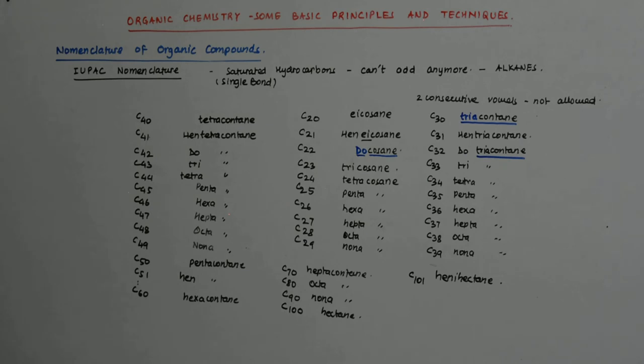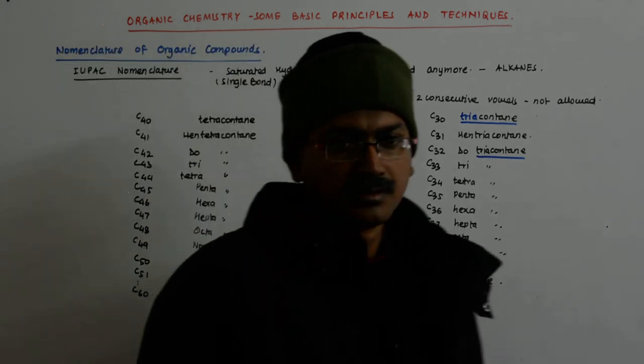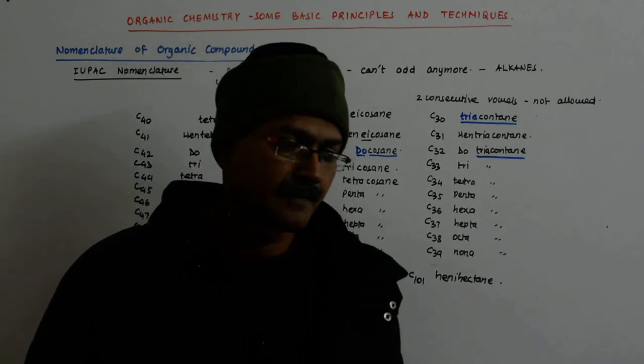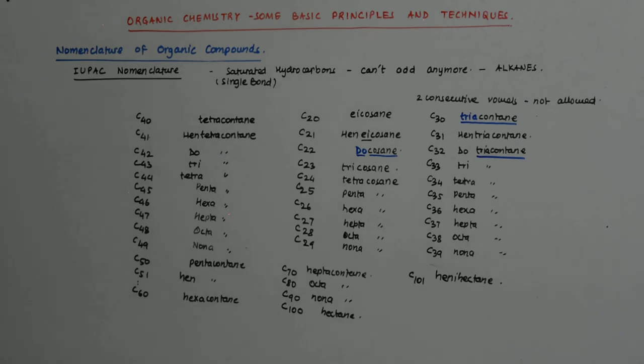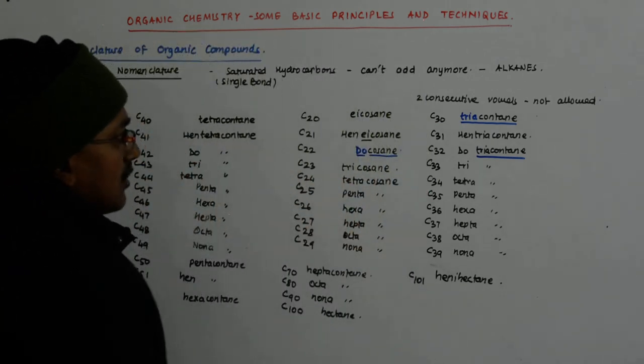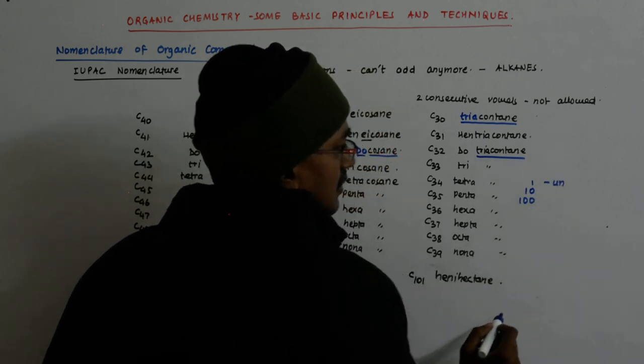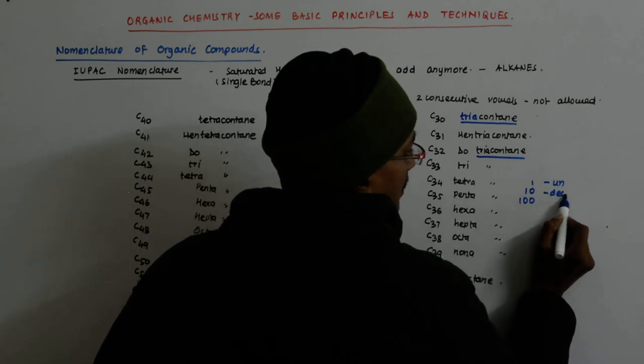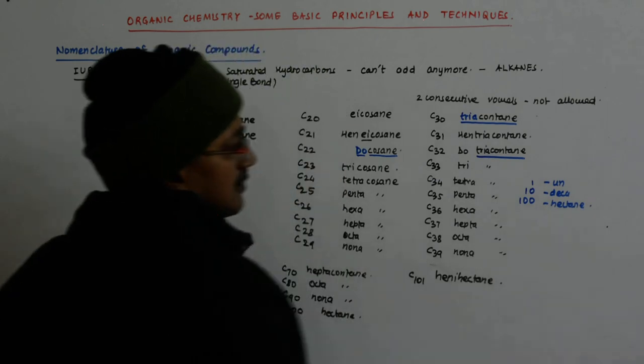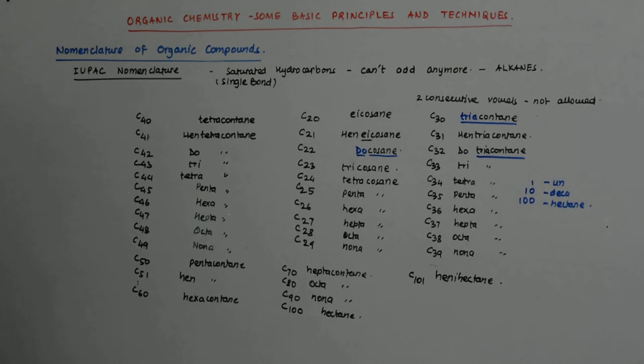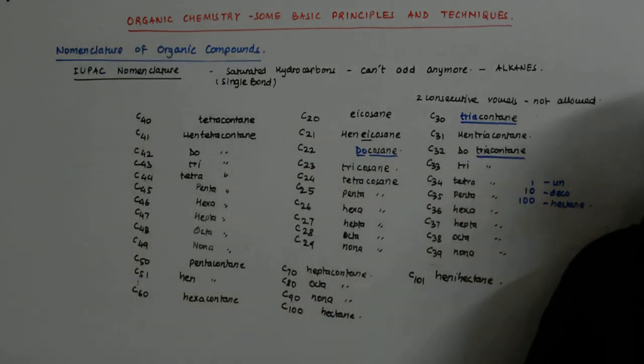So 110 and 111 will be? Decahectane. Decahectane is 110. What is 111? Undecahectane, right? So undecahectane, un is 1, deca is 10, hectane is 100. So you do it as 1 and 10 and 100. This is un, this is decahectane. So it goes like that. More academic, but maybe some fun to learn.